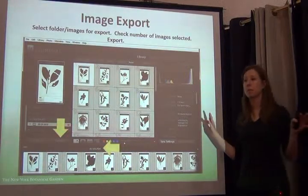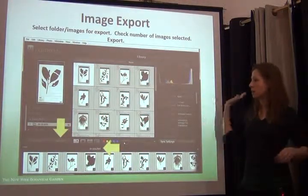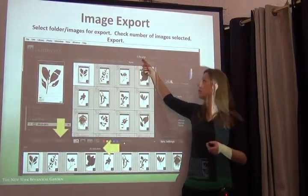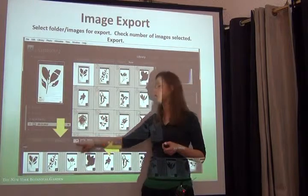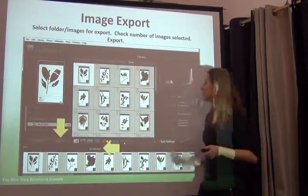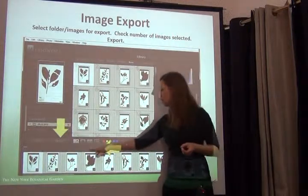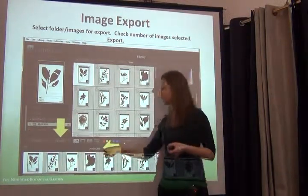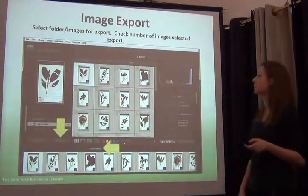When you're happy with your image processing and satisfied with your batch, select all the images. We're back in the library module — select all the images in grid view. For some reason it doesn't work in loop view, so make sure you're in grid view. Select them all and export. I can see here that of the 36 images I processed, 36 have been selected. Double-check to make sure you've actually selected all that you want to export.